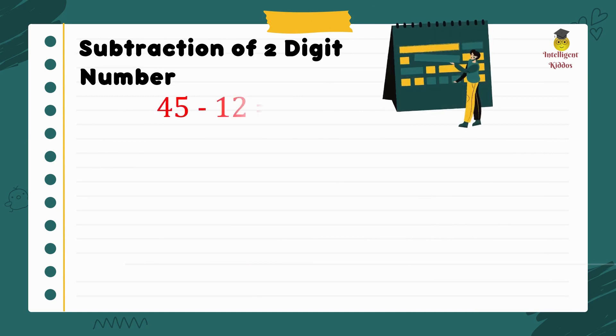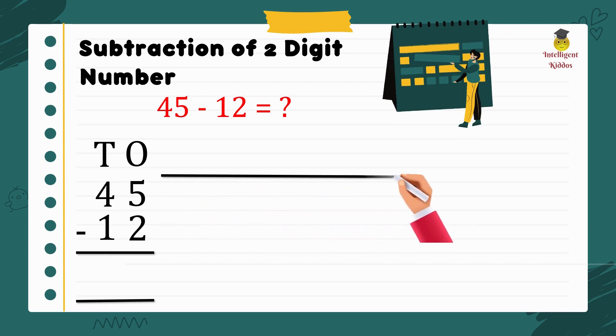45 minus 12. Place all the digits according to tens and ones position. Draw a number line.